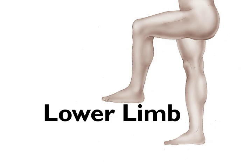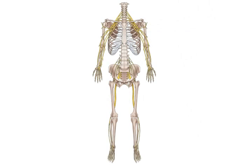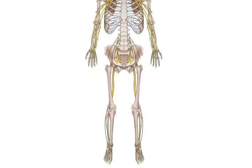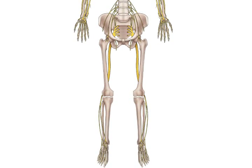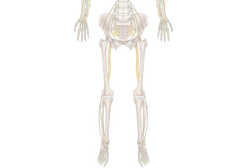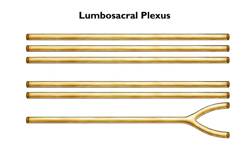Now, let's examine the lower limb. The lower limb is controlled by nerves from the lumbosacral plexus. This illustration shows the lumbosacral plexus from the anatomic perspective. As we did with the upper limb, from here on, we'll discuss the lumbosacral plexus using this schematic diagram.